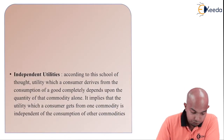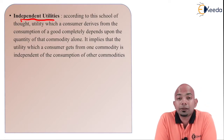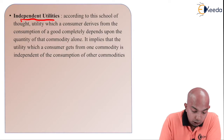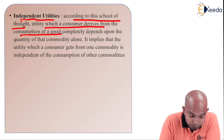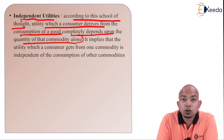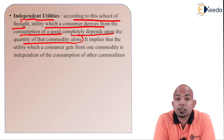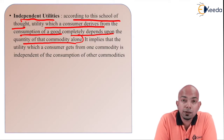The next assumption refers to independent utilities. According to this school of thought, the utility which a consumer derives from the consumption of a good is completely dependent upon the quantity of that commodity alone. Whatever quantity you have of that commodity determines how much satisfaction you have derived from it.